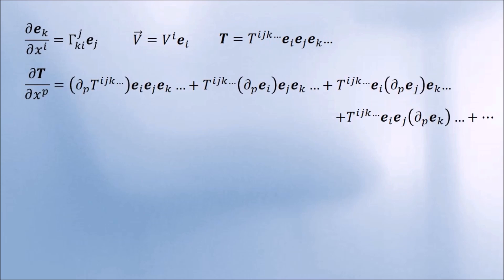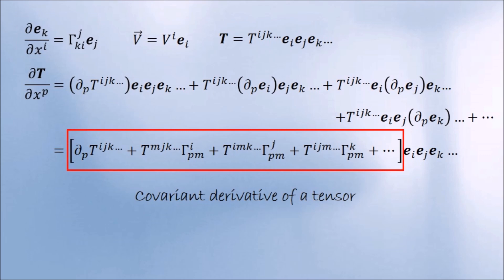Okay, now we want to look at how a tensor field changes from point to point. To do this, all we need is to take a partial derivative. On the right-hand side, we apply the good old chain rule. Plugging in this relation, and rearranging some indices, results in this expression. This is the covariant derivative of a tensor.